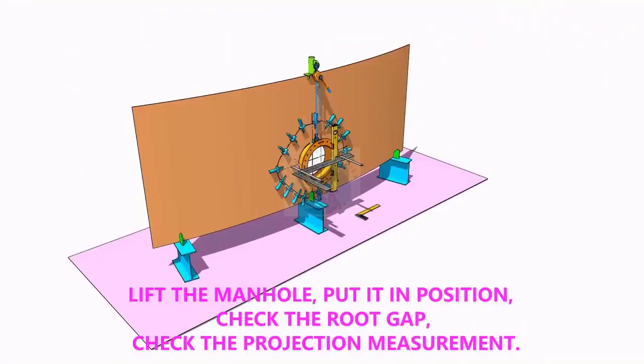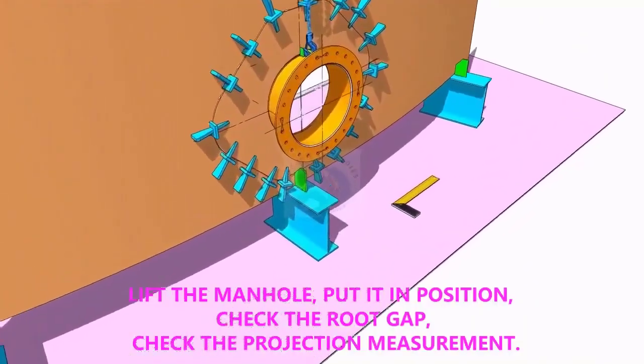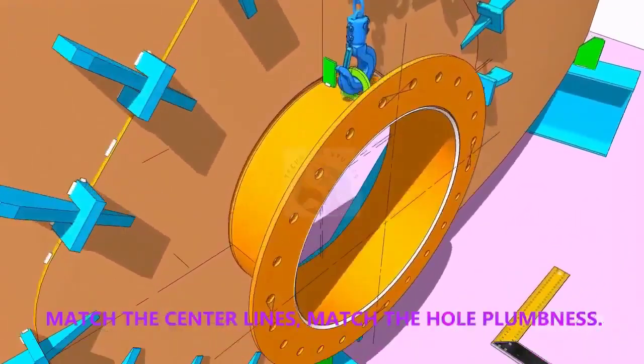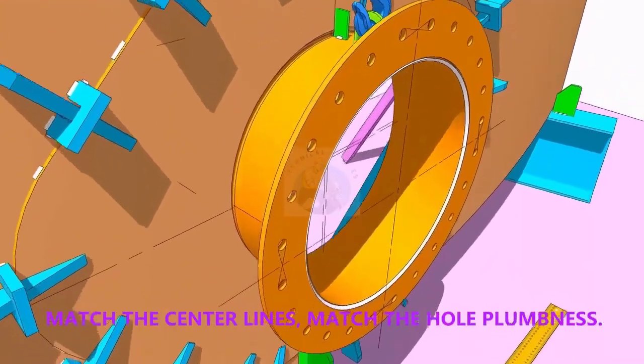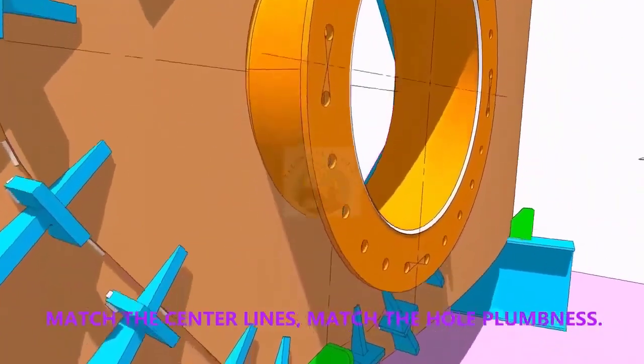Put the manhole in its position. Correct the plumbness. Correct the projection of the manhole. Correct the gap. Check again the plumbness.